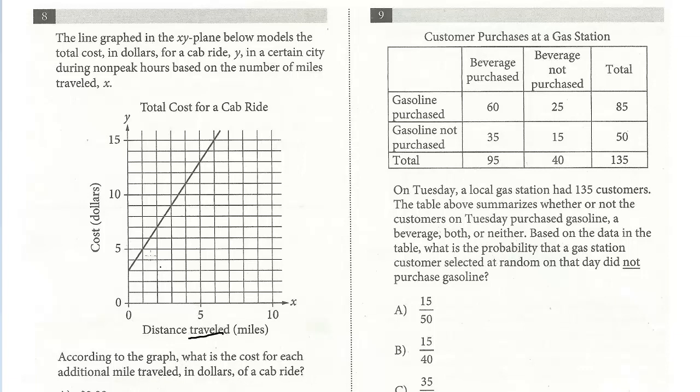We've got the distance on the X and we have the cost on the Y, and we just want to know what the cost is for each additional mile. So if the X goes up by 1, the cost, which is the Y, will just increase by the slope. That's all you have to do is find the slope of this line.